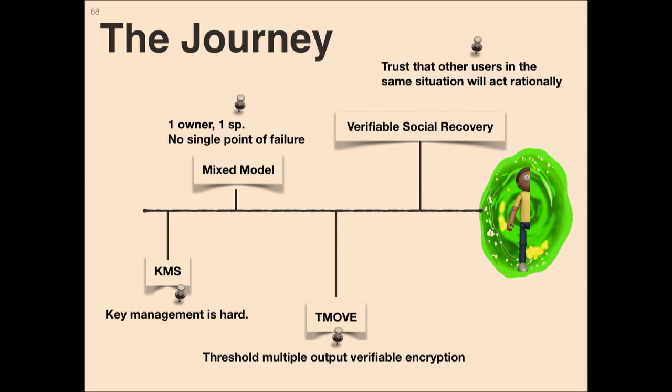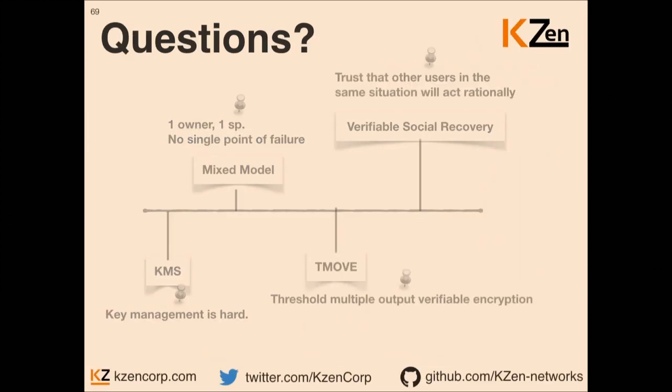To recap: we showed that key management is a hard problem. We introduced threshold signatures and the mixed model, showing it provides no single point of failure. We then described threshold multiple output verifiable encryption and showed that if we assume all parties under the same service provider have the same motivation to exit, then by collaboration they can achieve verifiable social recovery. And that's it.